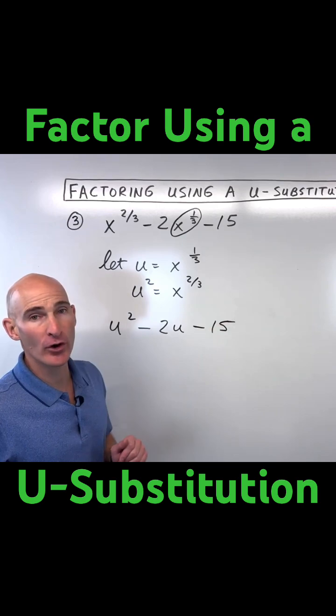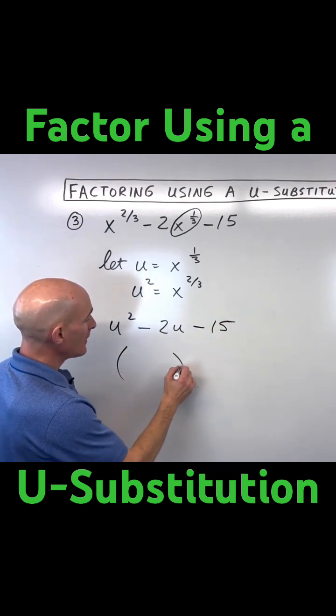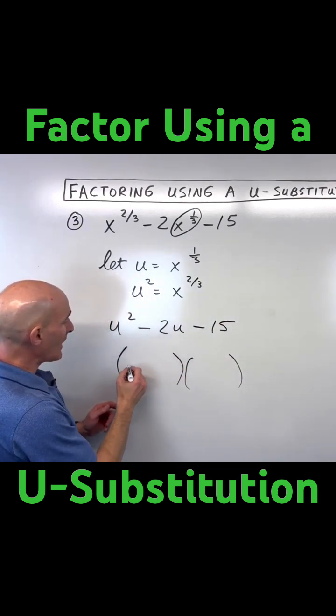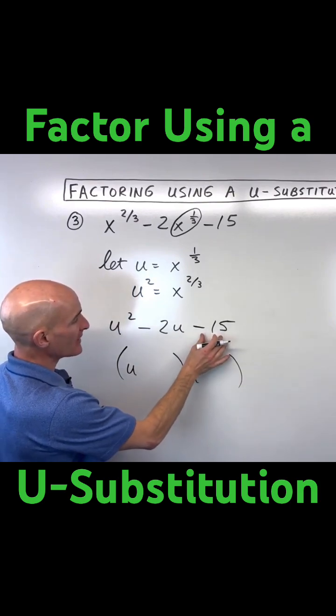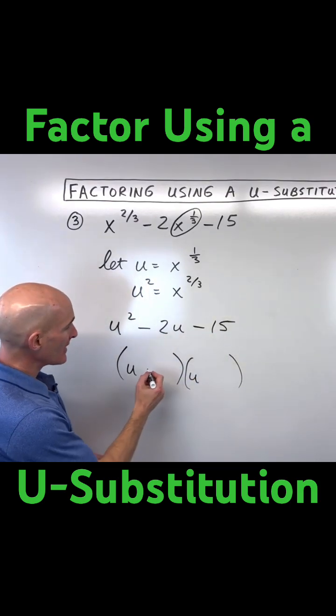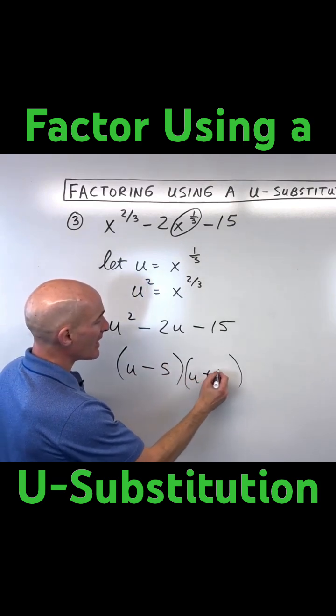So you can see this is a quadratic trinomial. We want to factor it into two binomials. And let's think of two numbers that multiply to negative 15, but add to negative 2. That's going to be negative 5 and positive 3.